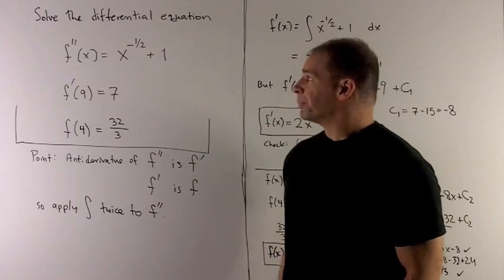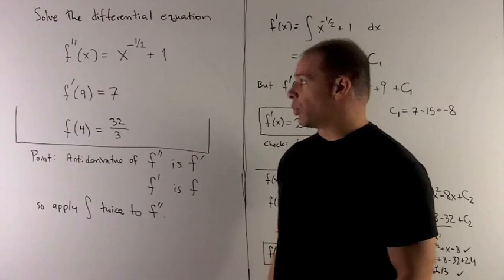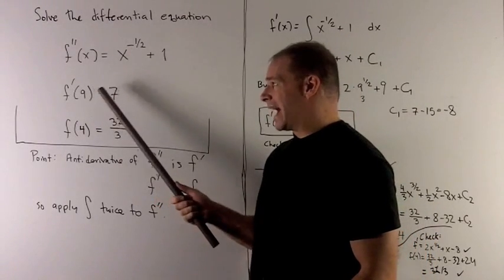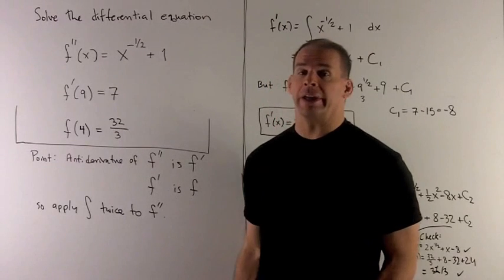Solve the differential equation f double prime equals x to the minus 1 half plus 1, f prime of 9 equals 7, f of 4 equals 32 over 3.